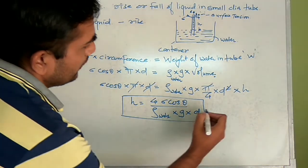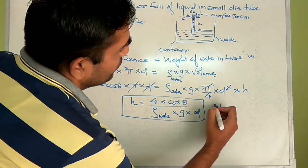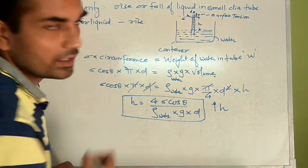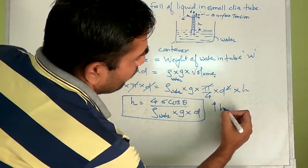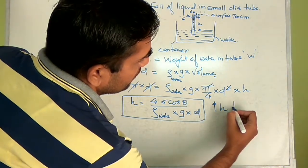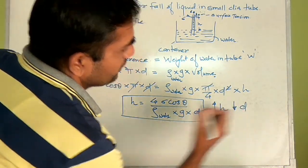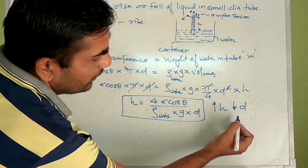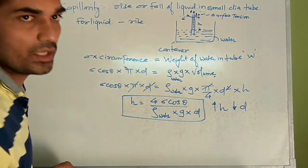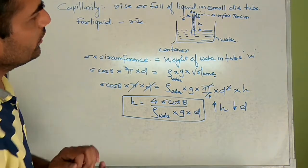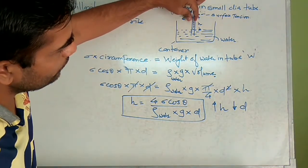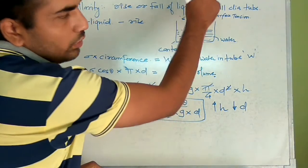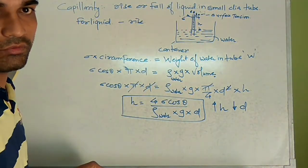From this equation, H and d are inversely proportional — when H increases, diameter d decreases, or if diameter decreases, H increases. This means if the diameter of the tube is small, the height rise in the water always increases.